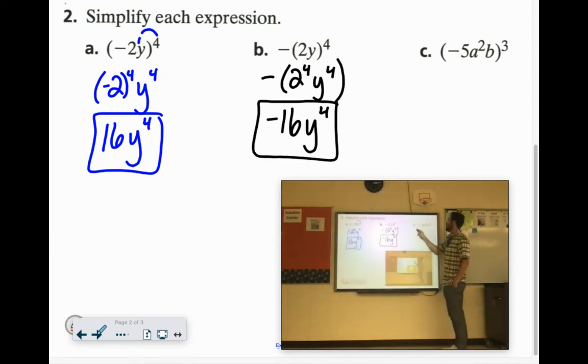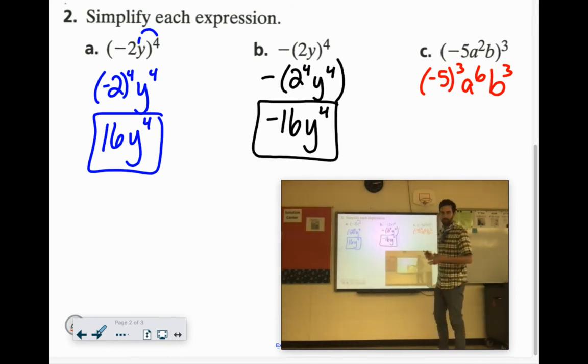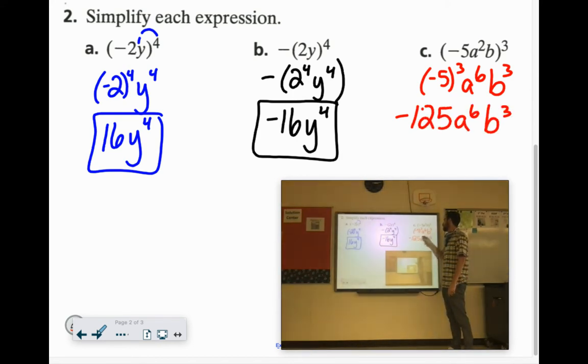And over here, we'd have negative 5 to the 3rd, a to the 6th, and b to the 3rd. Now, when it's negative and it has an odd exponent, it doesn't matter if it's in parentheses or not, it's going to come out negative. 5 squared is 25, think of 5 quarters, that's $1.25. So negative 125, a to the 6th, b to the 3rd.